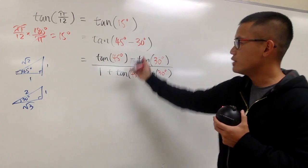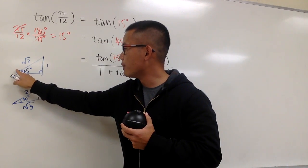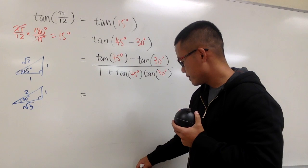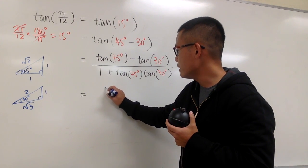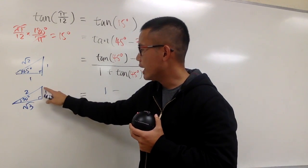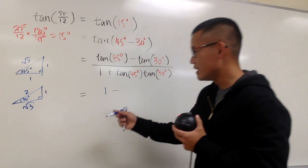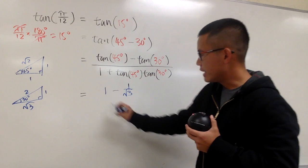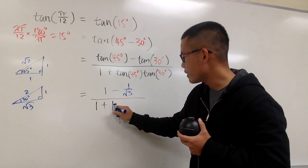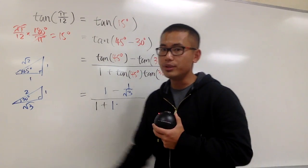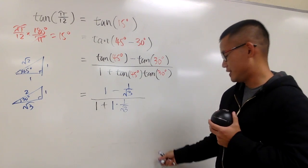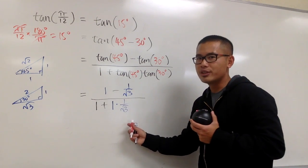Let's work with tangent of 45 first. Looking at the 45-45-90 triangle, tangent is opposite over adjacent, which is 1 over 1, so tangent of 45 is just 1. Then tangent of 30: looking at the 30-60-90 triangle, opposite over adjacent is 1 over square root of 3. So we have 1 minus 1 over square root of 3, all over 1 plus 1 times 1 over square root of 3. I'm not rationalizing the denominator yet because we have a complex fraction.